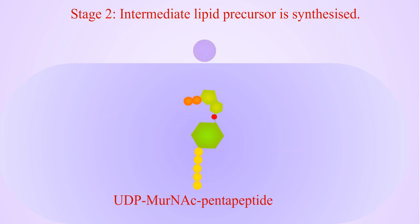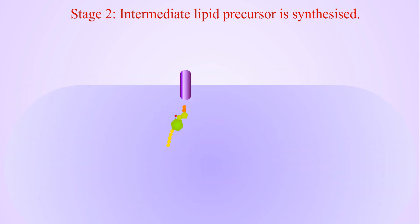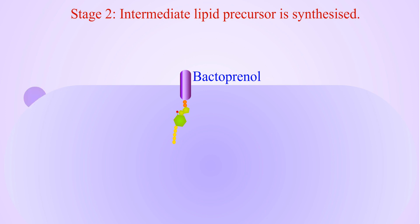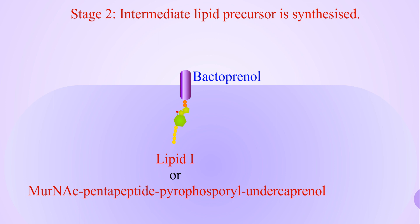In Stage 2, precursor lipid intermediates are synthesized in the cytoplasmic membrane. The phosphoryl-N-acetyl-muramylpentapeptide derived from UDP-N-acetyl-muramylpentapeptide is transferred to a plasma membrane acceptor named bactoprenol.